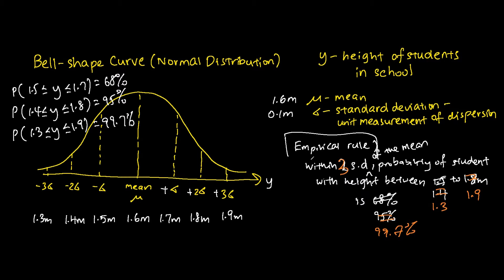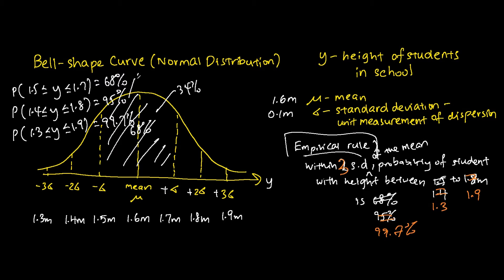So to summarize the basics of the bell-shaped curve and the empirical rule: within one standard deviation of the mean the probability is 68 percent, within two standard deviations it is 95 percent, and within three standard deviations it is 99.7 percent. On the curve itself, within one standard deviation of the mean — from here all the way to here — this is 68 percent. Because the mean represents the symmetric line of the curve, this is 34 percent on each side.